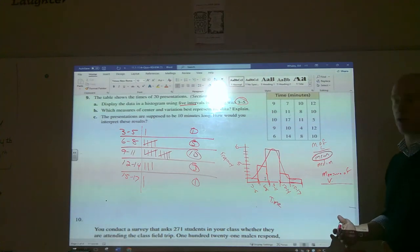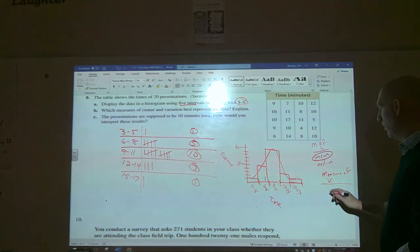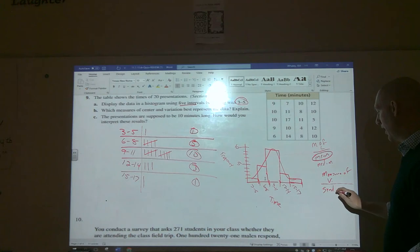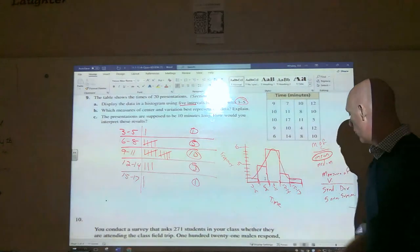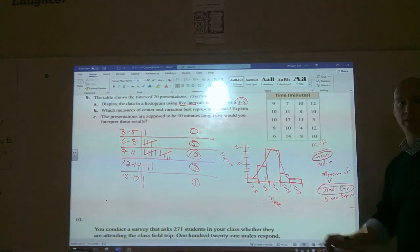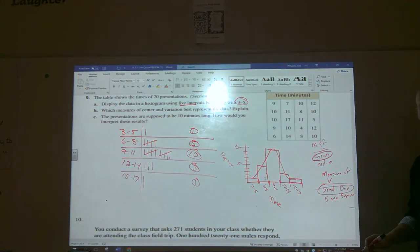Then measures of variation. This changed a little bit because we included the five number summary now, so we're really picking between standard deviation and our five number summary. Since it's symmetric, no outliers, we want standard deviation. If there was an outlier you could pick your five number summary. That goes back with section 11.3, if you have any questions on that, look at your notes.